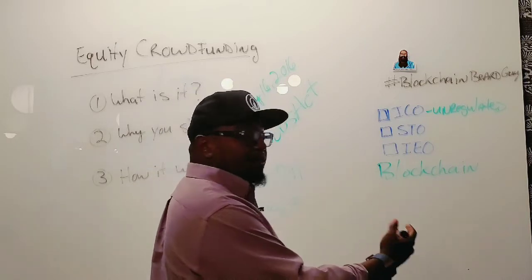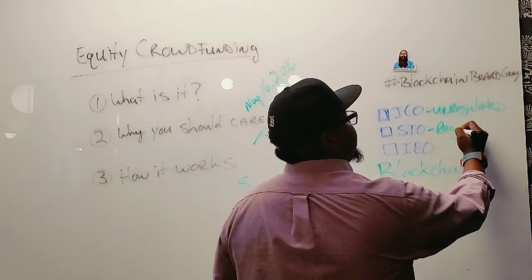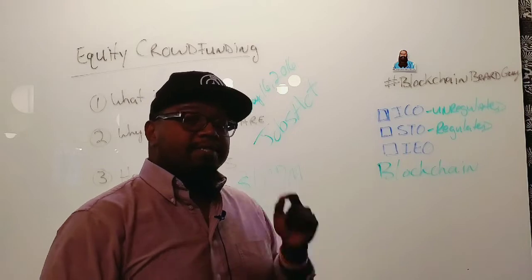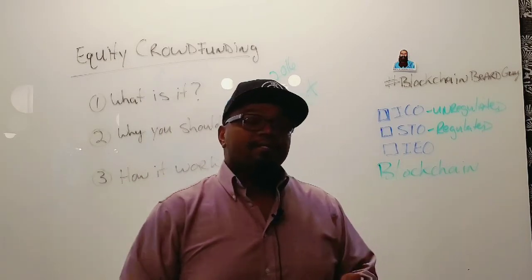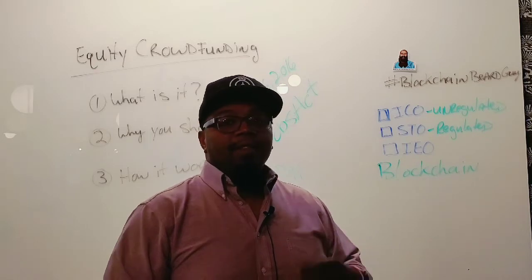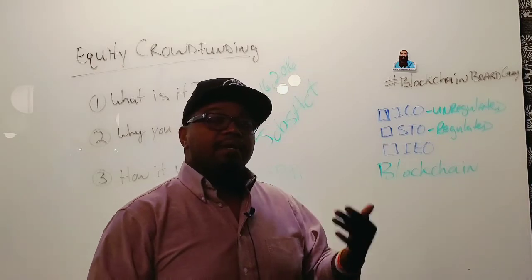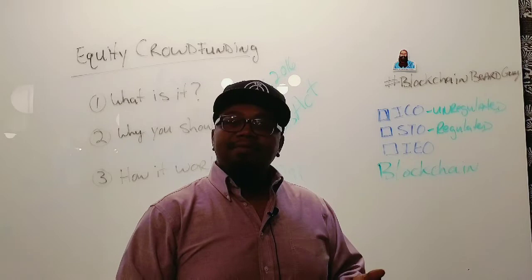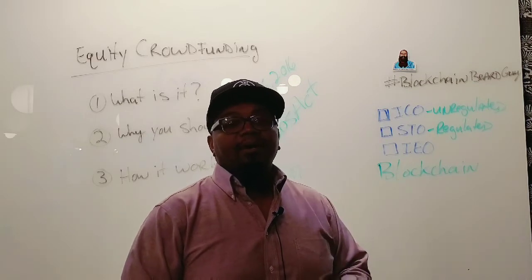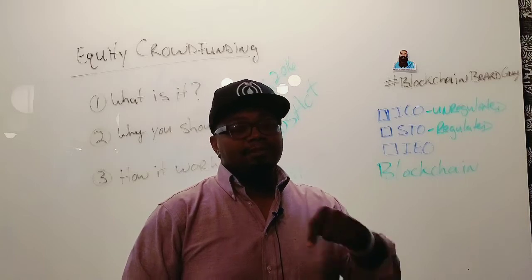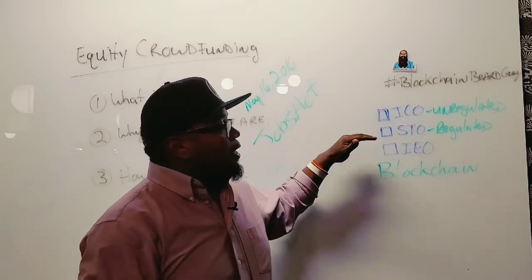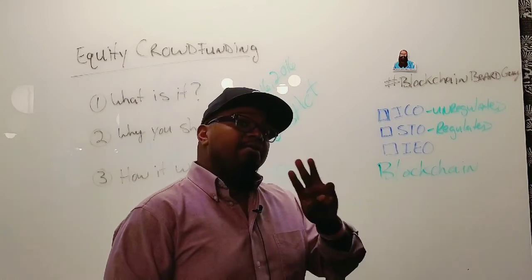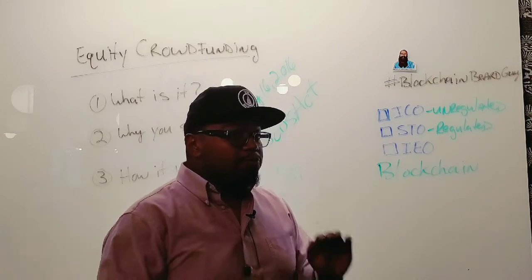When we talk about STOs — securitized token offerings — these are regulated crowdfunding. That example of Dawn Dixon's Popcom.shop: they used Reg CF and raised a million dollars, and they also issued a token along with their equity offering. I believe their investors got B shares — you can check out all their information as they raised funds on StartEngine. An STO is a regulated form of crowdfunding where you can offer equity, debt, or tokens.